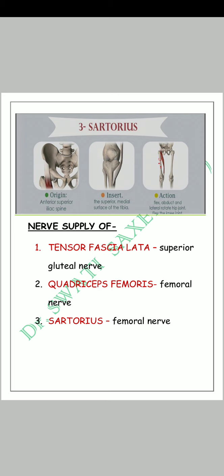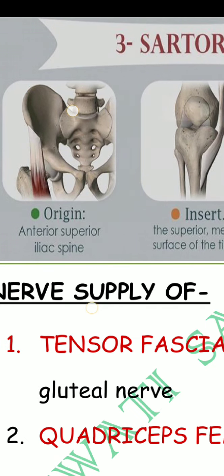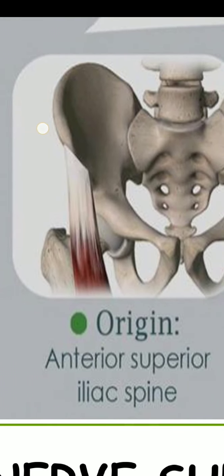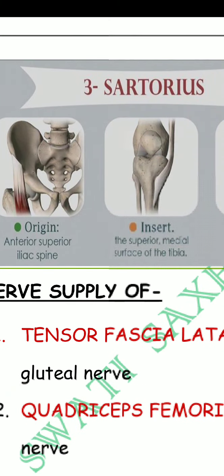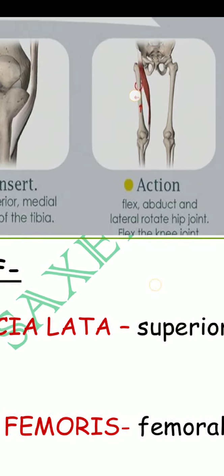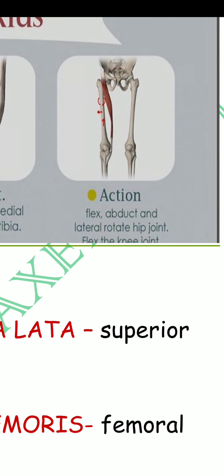The last muscle of the anterior compartment of the thigh is the Sartorius muscle. Its origin is from the anterior superior iliac spine (ASIS). You can see this structure in the diagram. The action of the Sartorius is: it flexes, abducts, and laterally rotates the hip joint, and also flexes the knee joint.